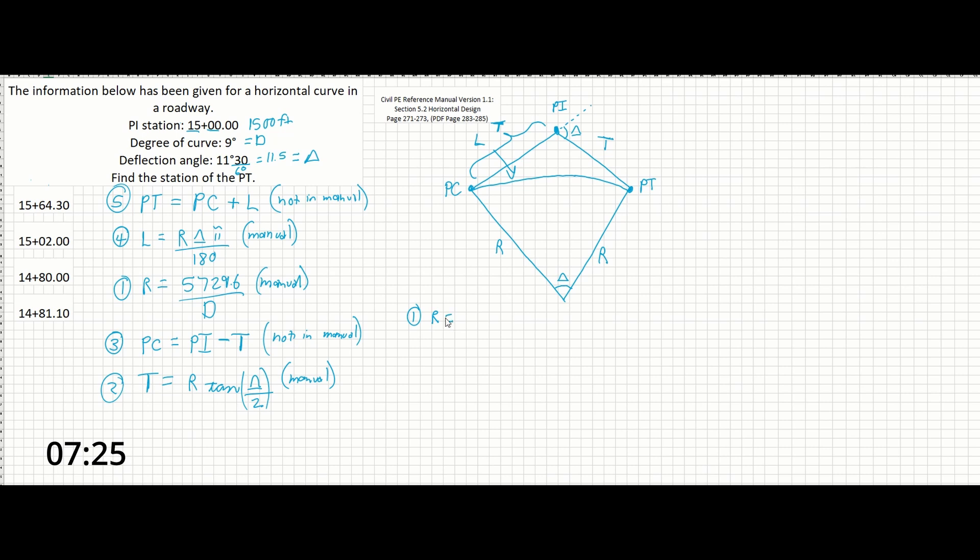So, R is going to be equal to 5729.6 feet over 9 degrees. That's going to give us about 643.62. Step 2, our tangent is going to be plugging in this value. So, 643.62 times the tan of 11.5, which is our deflection angle in the correct units up here, over 2. That's going to give us a value close to 64.8.